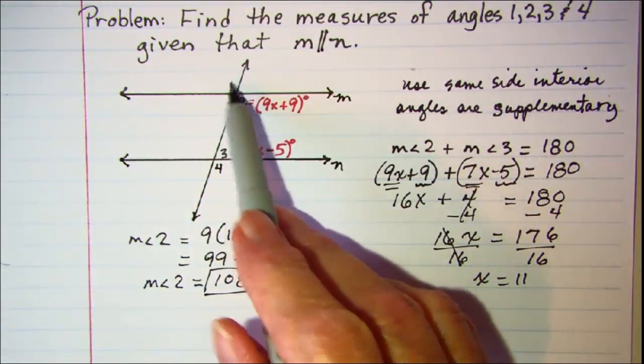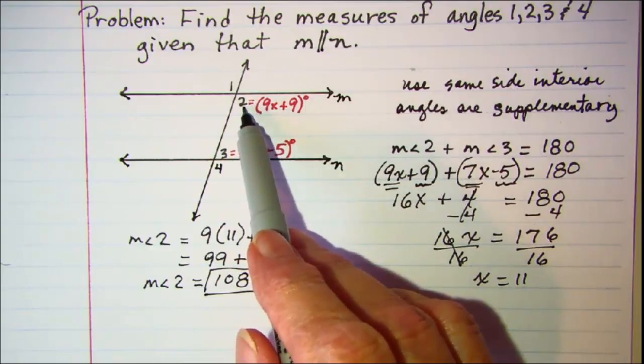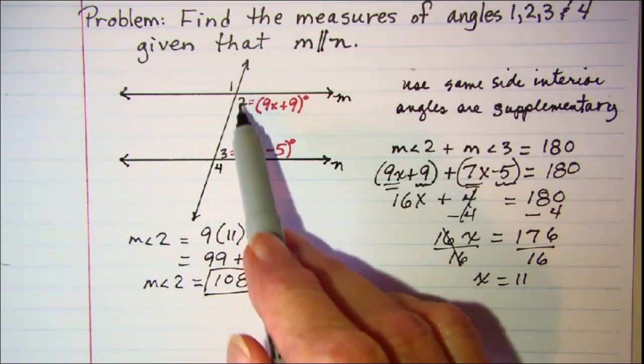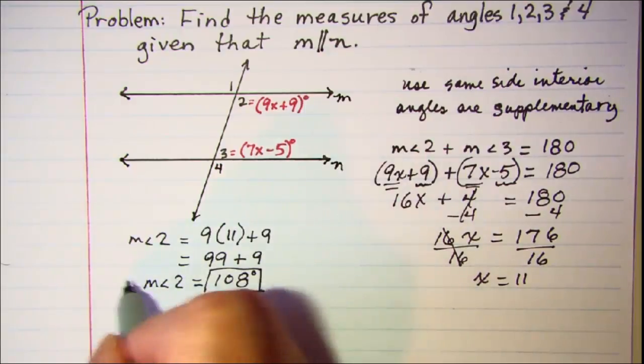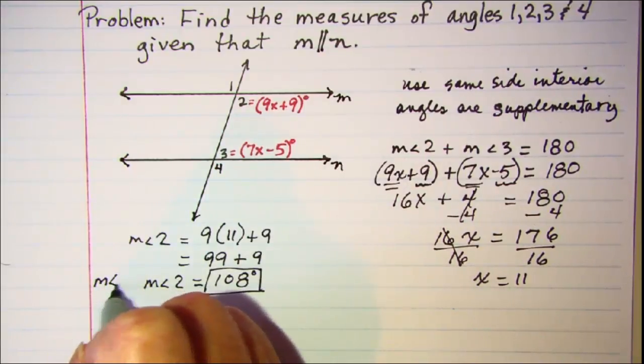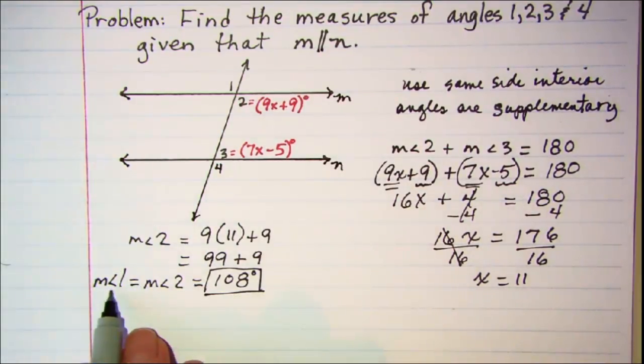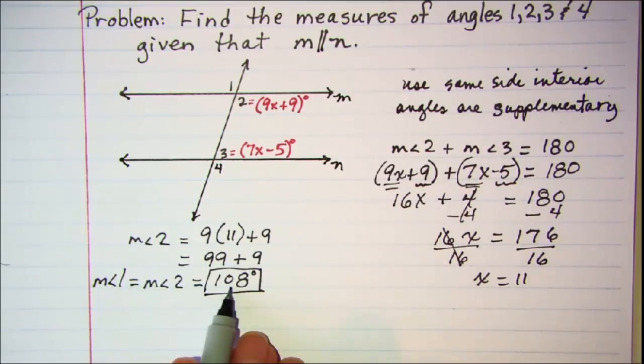Now because angle 1 and angle 2 are vertical angles, we know that angle 1 is also 108. So I'll just write that here. The measure of angle 1 is equal to the measure of angle 2, which is equal to 108.